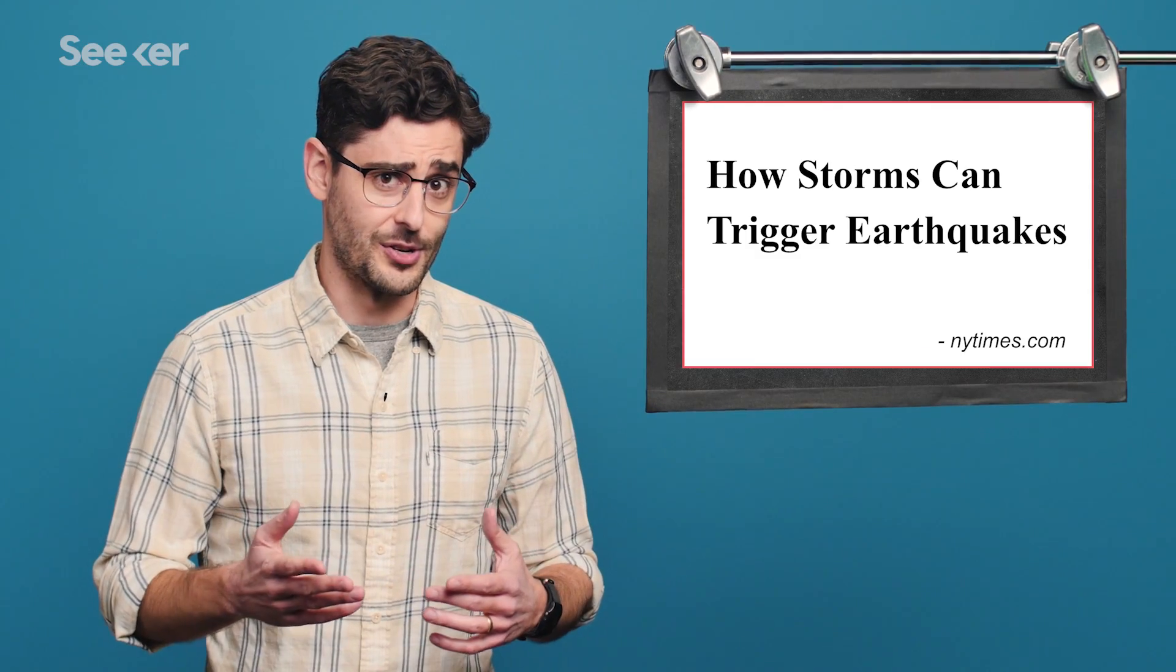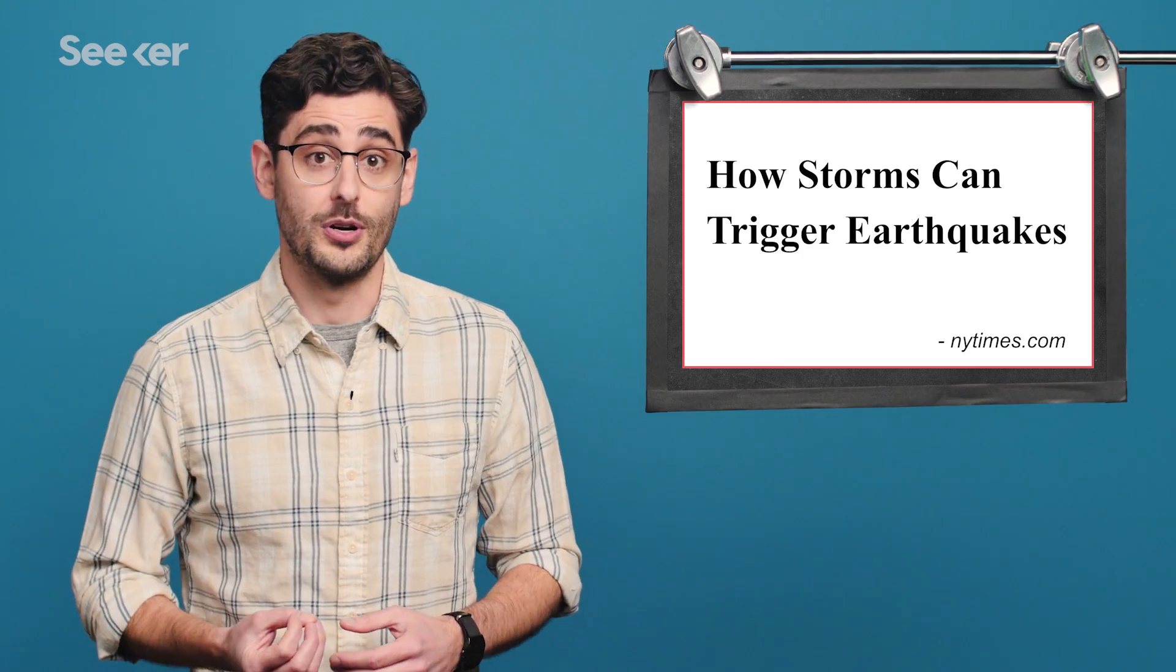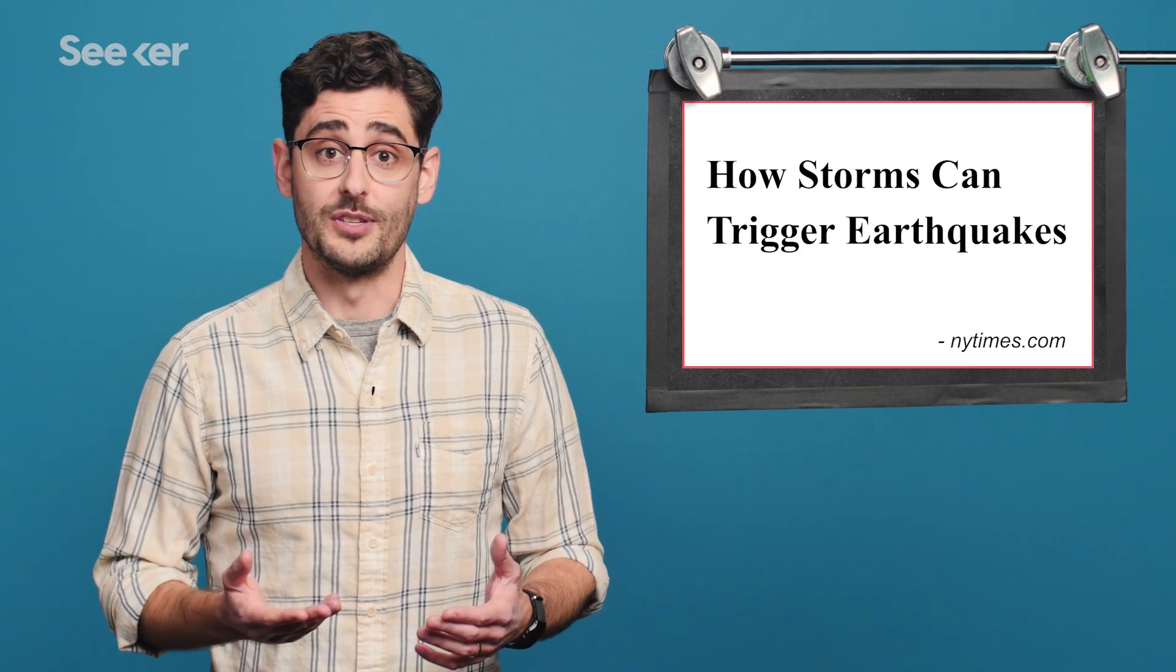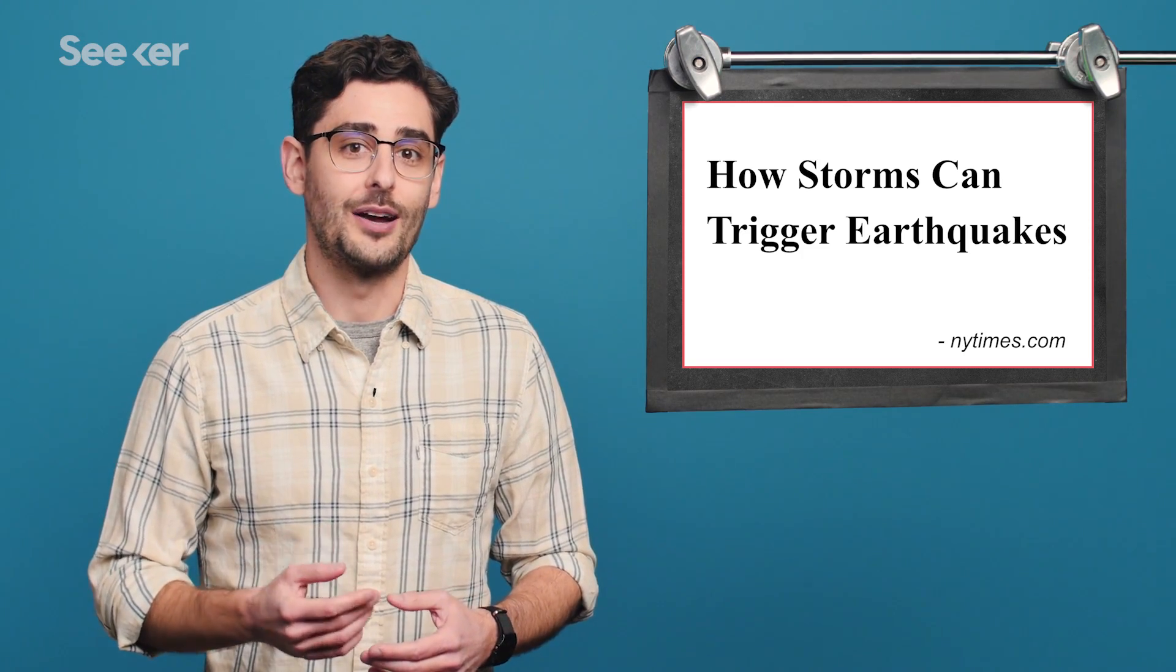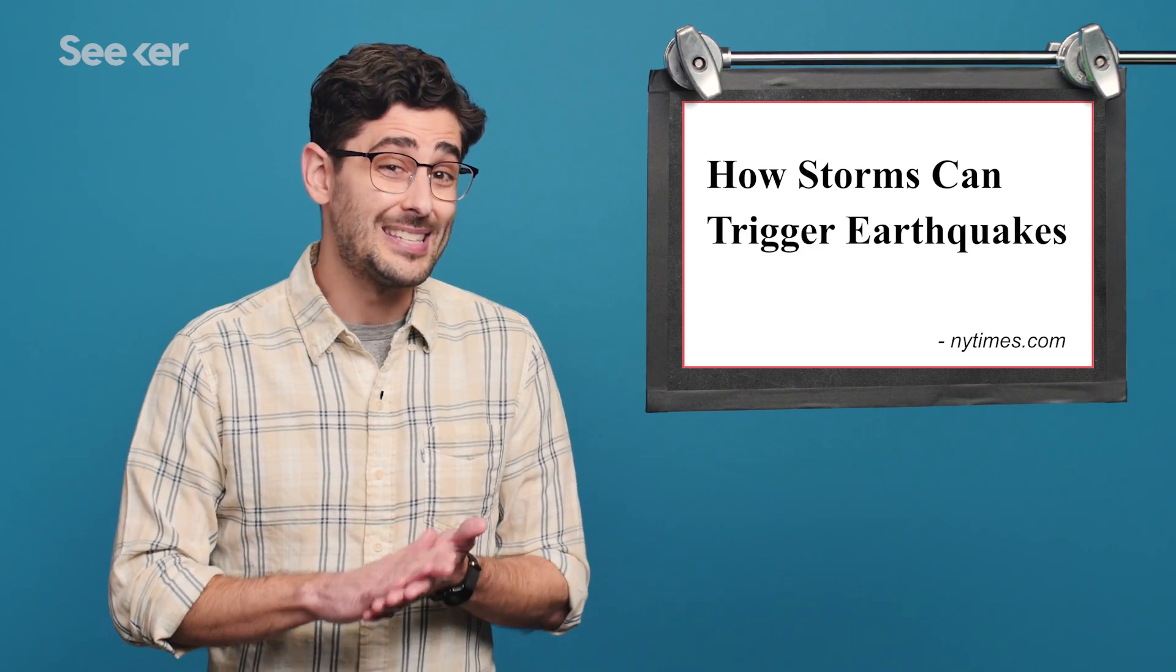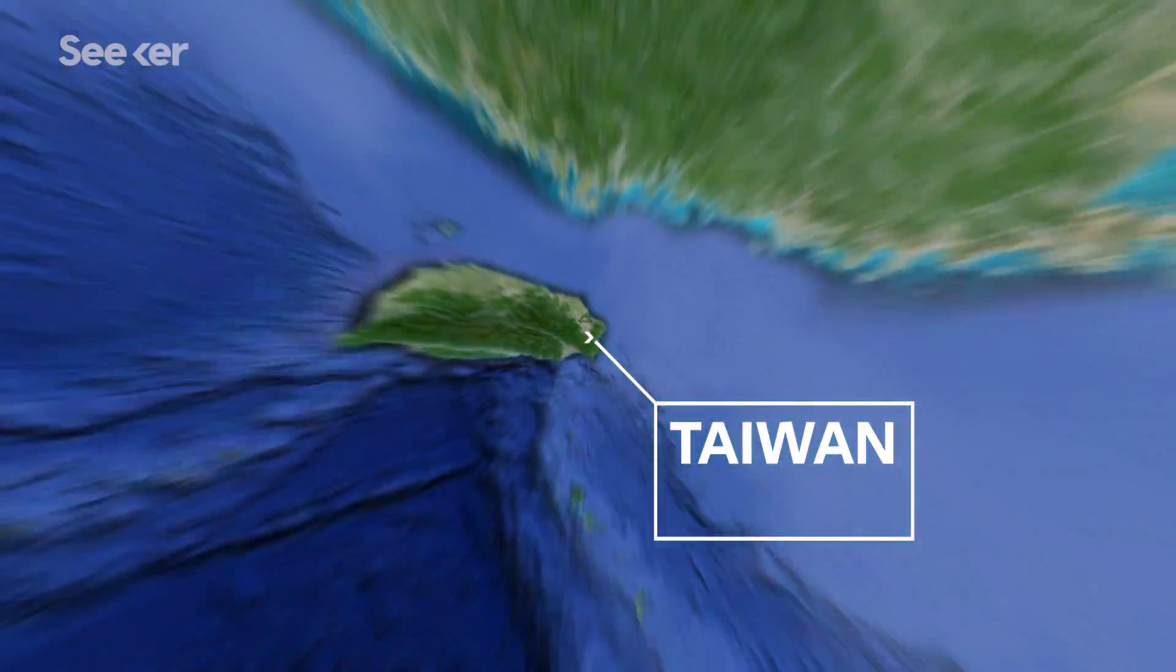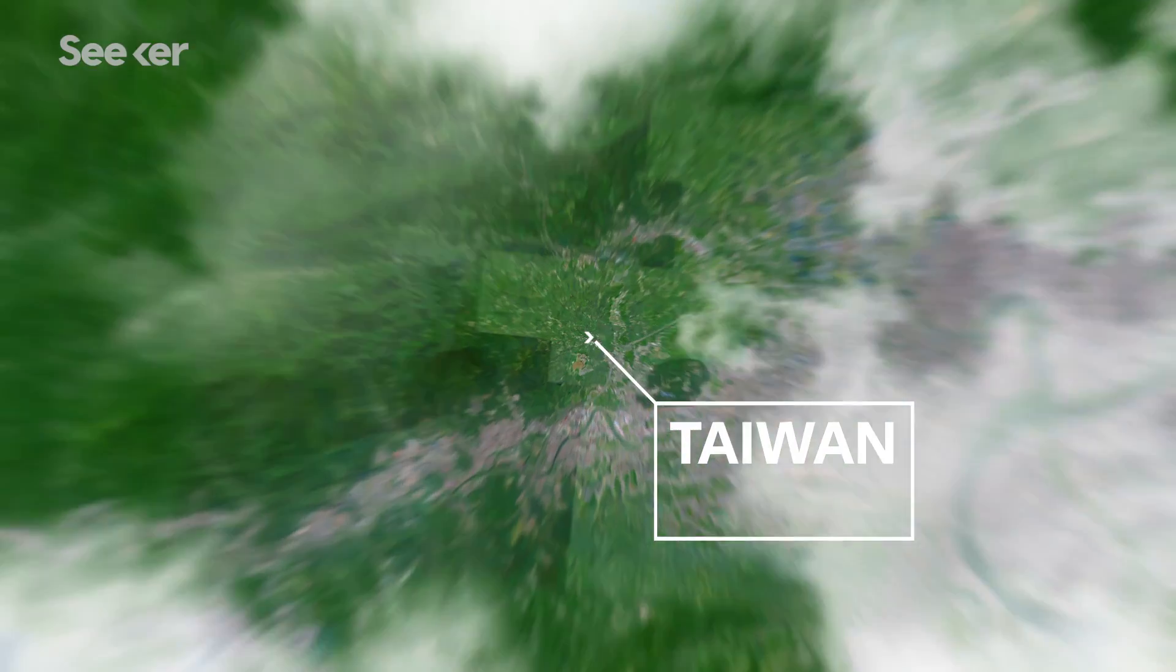Now, what about those headlines and the whole weather connection? Well, the New York Times reported that the sudden plummeting of air pressure, which can happen when a storm quickly moves in, causes underground water and air to rush towards the surface. This potentially reduces friction between tectonic plates, possibly making an earthquake more likely. The New York Times points to part of a study done in Taiwan, which is one of the most seismically active regions in the world.